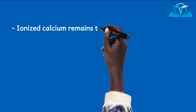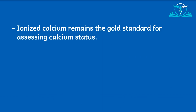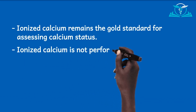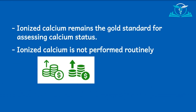Ionized calcium remains the gold standard for assessing the calcium status of the patient. However, ionized calcium is not routinely performed because it is more costly and the sample taken must be handled carefully and stored under appropriate conditions to preserve a sample pH of 7.4 to get an accurate report. This is according to UpToDate.